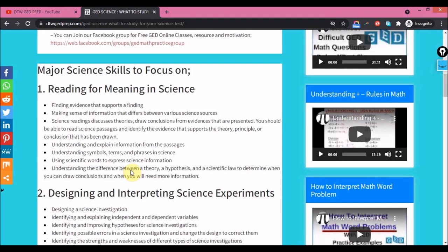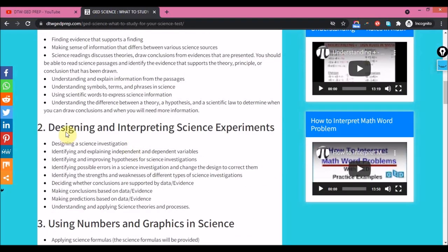The second skill you have to focus on is designing and interpreting science experiments. Don't worry, I'll do videos explaining all this - practice test examples explaining all this. So you should be able to design a science investigation or identify and explain independent and dependent variables.